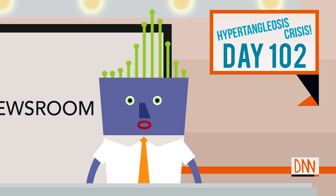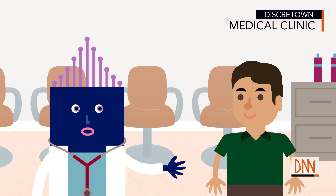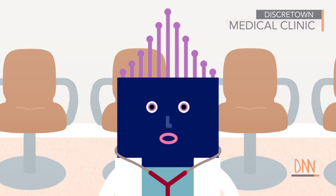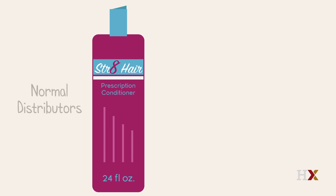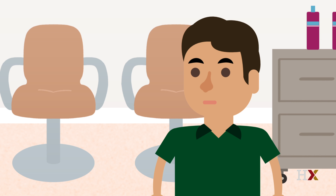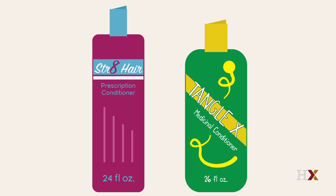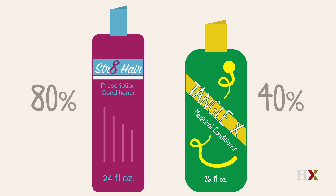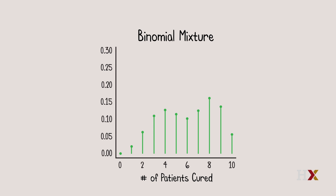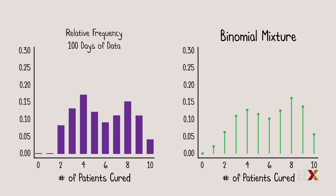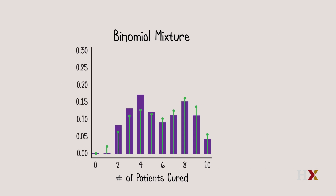Dr. Straighthair and Professor Blitzstein have been working tirelessly to unravel the mystery of bimodality. They are here now, live, to update us on their results. Joe and I have been poring over the data and have found an explanation we hope will not only resolve the statistical anomaly, but also let us improve the percentage of patients we can treat successfully. The conditioner comes from two different suppliers: normal distributors and Cauchy distributors. We discovered that the conditioner from normal distributors is far more effective. On each day, it was completely random which supplier was used. On days when the conditioner came from normal distributors, the success rate was 80%, but for Cauchy distributors, the success rate was only 40%. The overall distribution is a mixture of binomials, not a binomial. Here's the histogram of the data compared with the mixture distribution — the mixture fits much better than the binomial did.